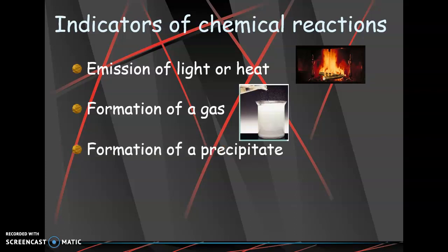Formation of a precipitate. A precipitate is a solid that would appear from the liquid and then filter out. So if I mix two liquids together and then a solid appears and sinks to the bottom of that test tube, then we would know there was a chemical reaction.